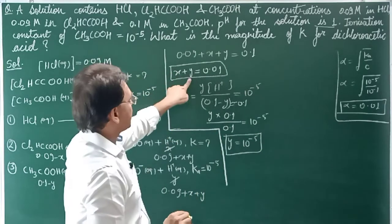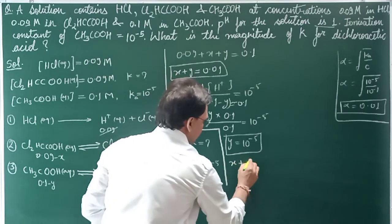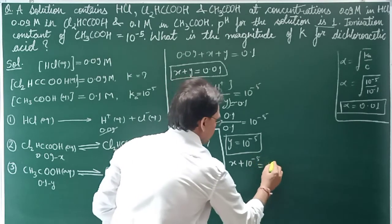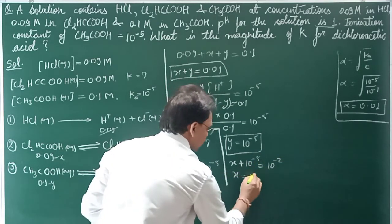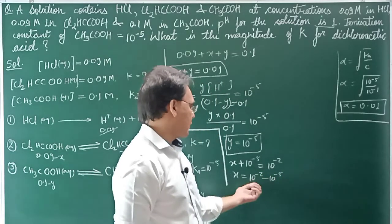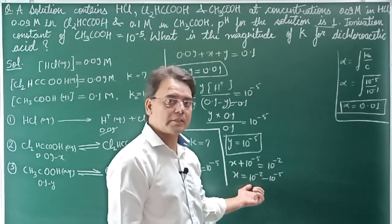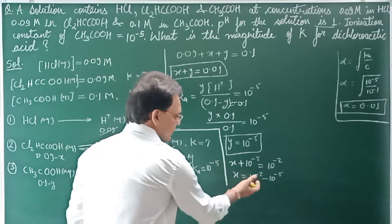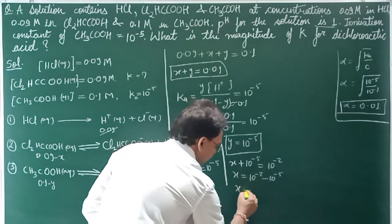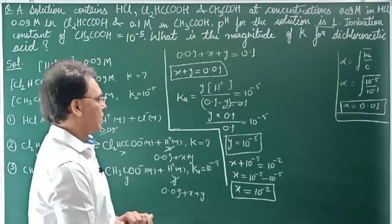Now from x + y = 0.01, substituting y = 10⁻⁵: x + 10⁻⁵ = 10⁻². Since 10⁻⁵ is less than 1% of 10⁻², and we can neglect up to 5%, we neglect it. Therefore x = 10⁻².